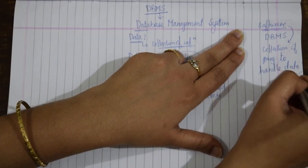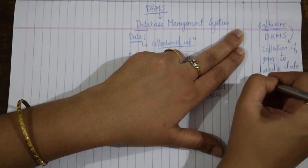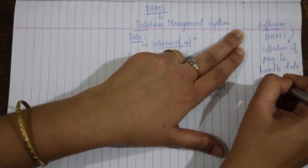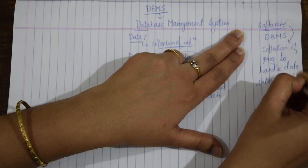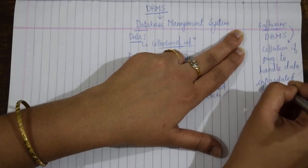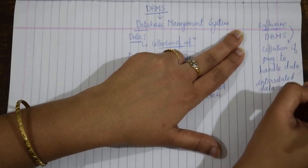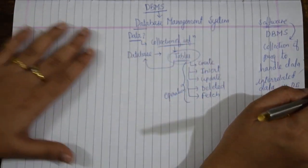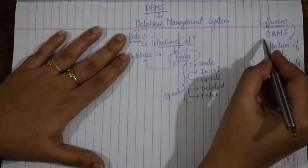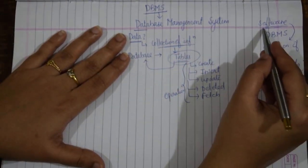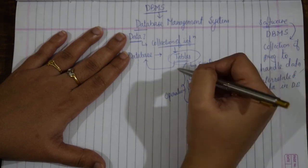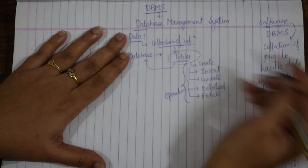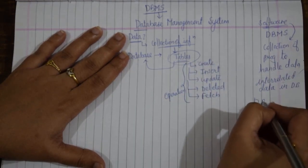What is software? Software is a collection of programs used to handle data — or interrelated data — in a database. So DBMS is a software which manages your database.